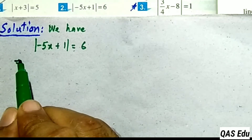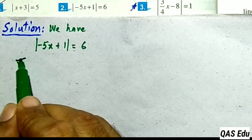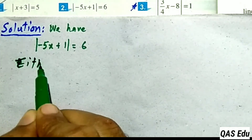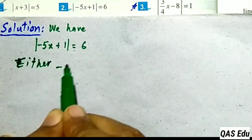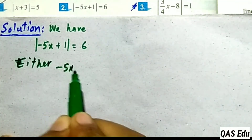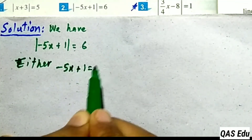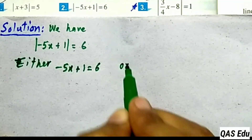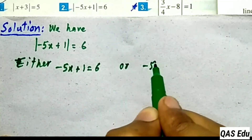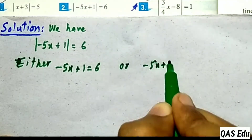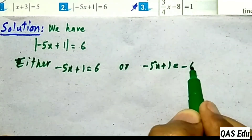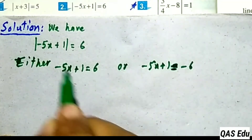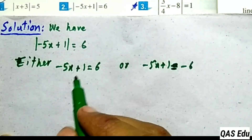There are two possibilities. Either minus 5x plus 1 is equal to plus 6, or minus 5x plus 1 is equal to minus 6. These are the two possibilities from the absolute value.